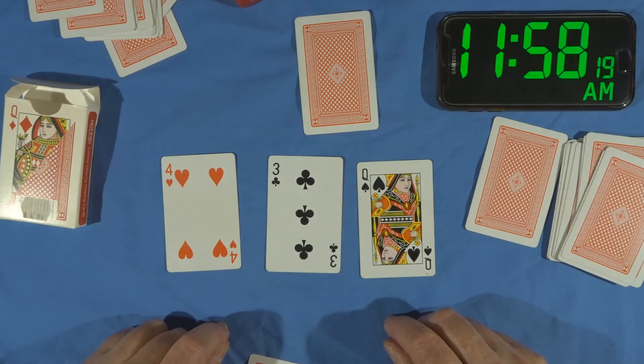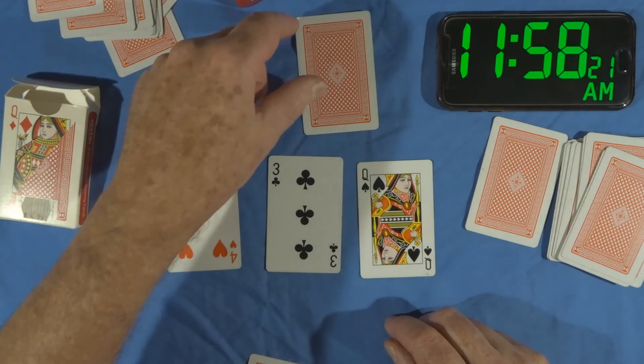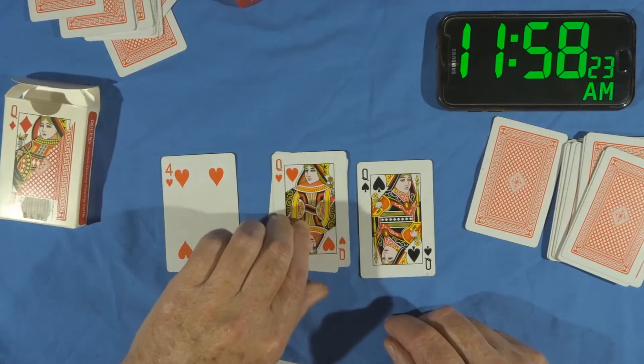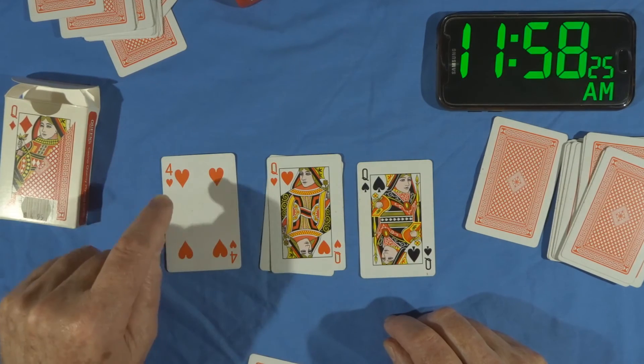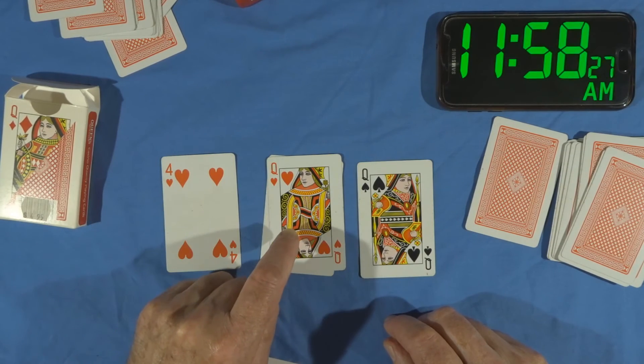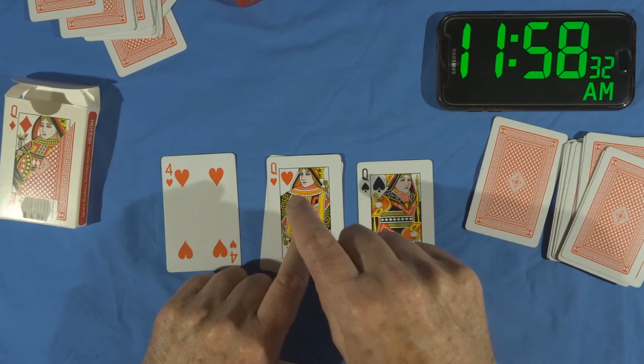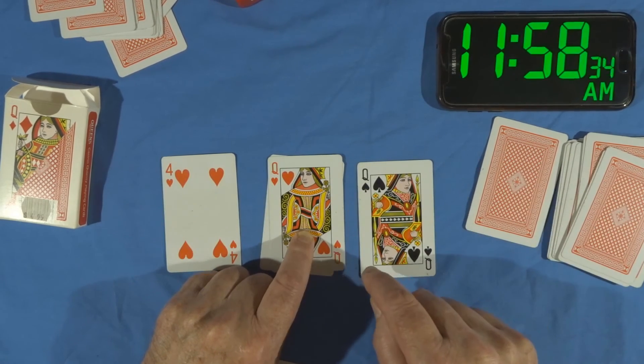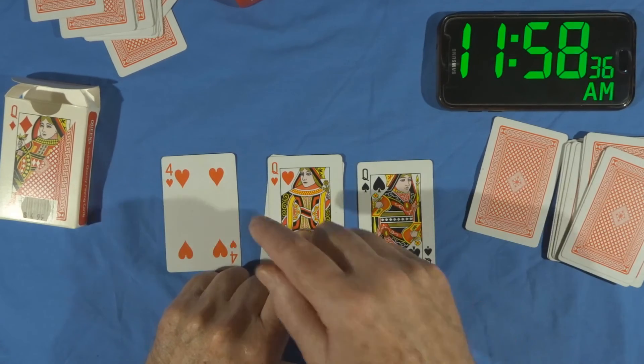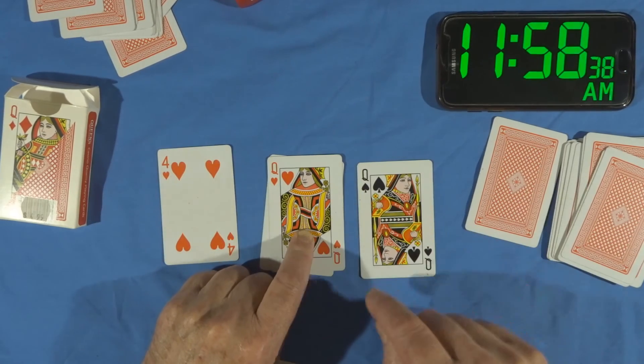Now remember I chose a prediction card before. I want to see if that is related to these cards. Okay, well we've got hearts and hearts and we've got queen and queen. So I've now found the cousins to the queen of hearts, which was my prediction card, in the four of hearts and the queen of spades.